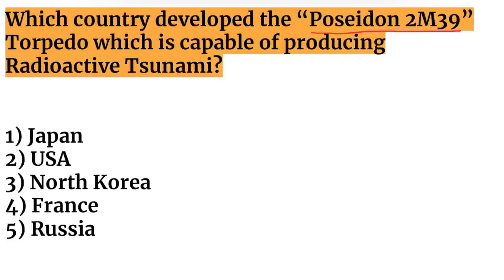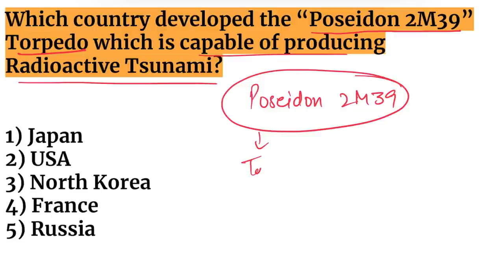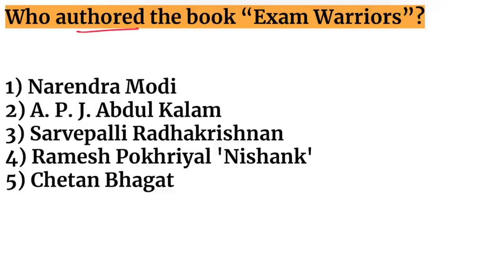Next question: which country developed the Poseidon 2M39 torpedo, which is capable of producing a radioactive tsunami? The Poseidon 2M39 is a torpedo capable of producing a radioactive tsunami and it was developed by Russia.